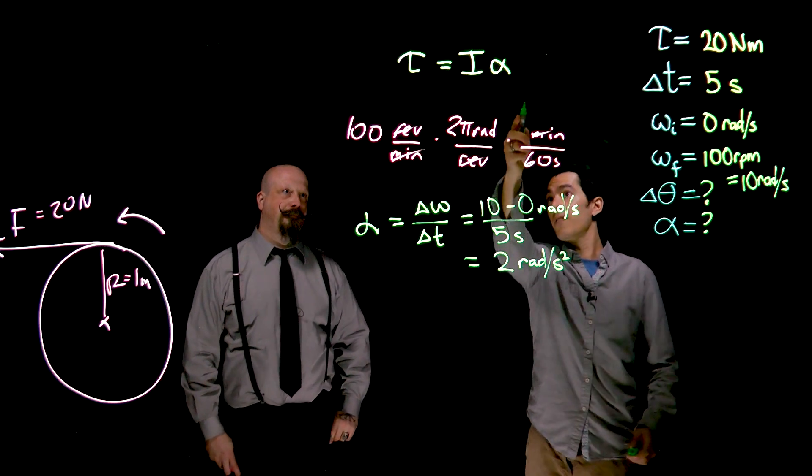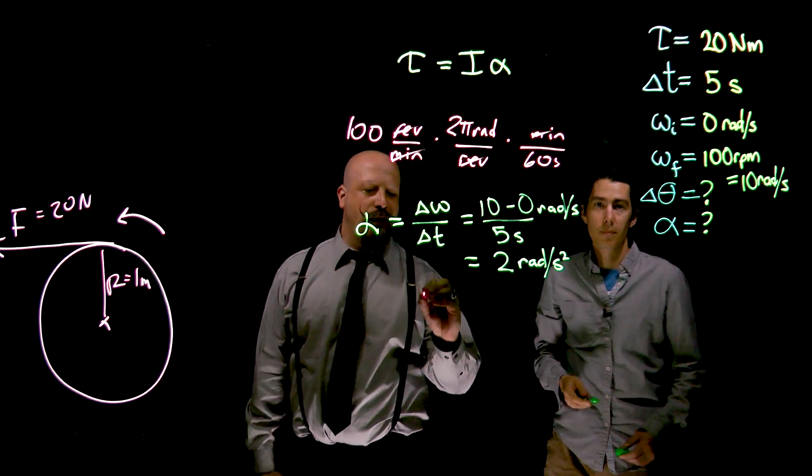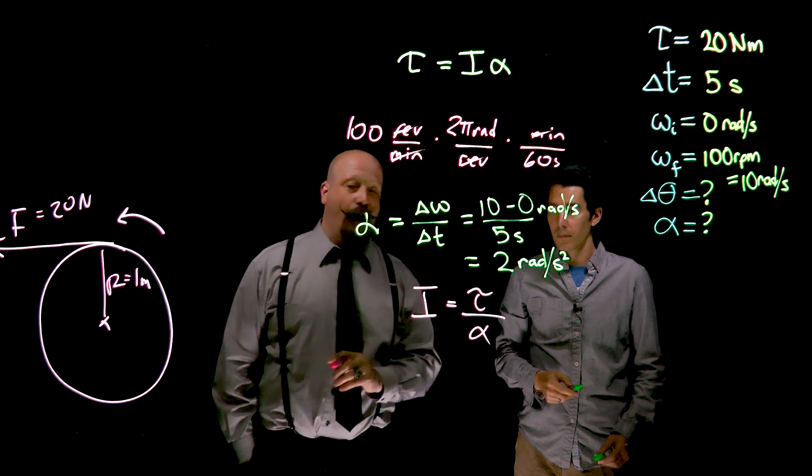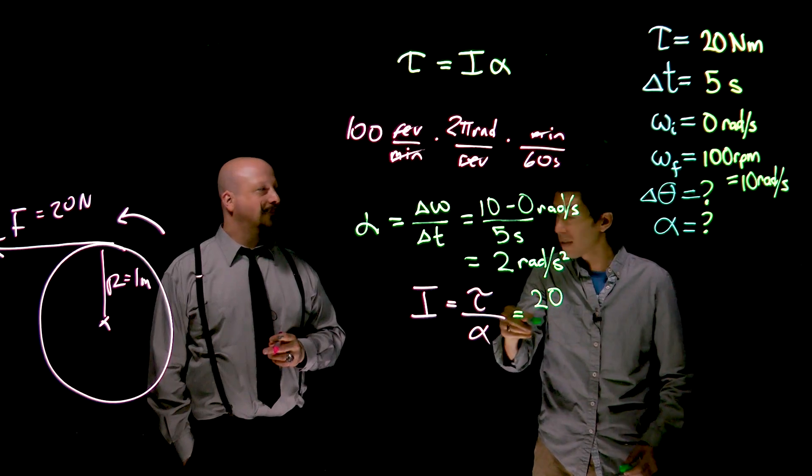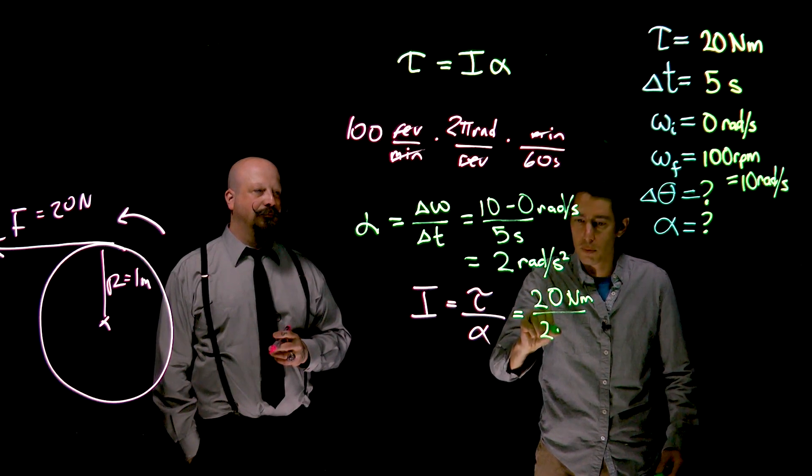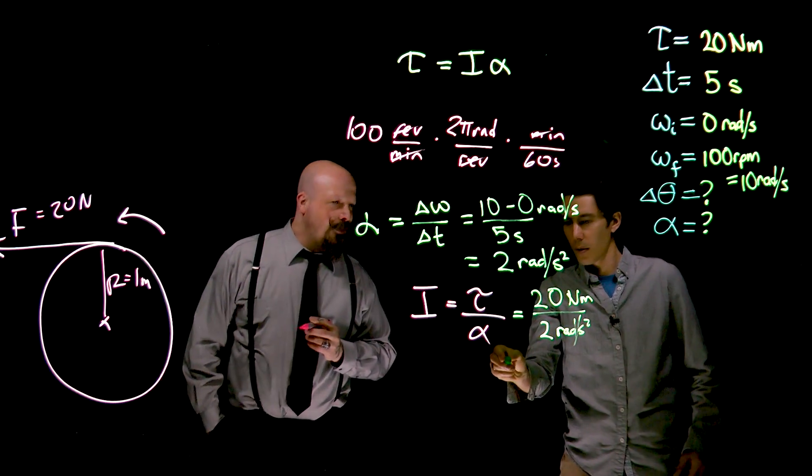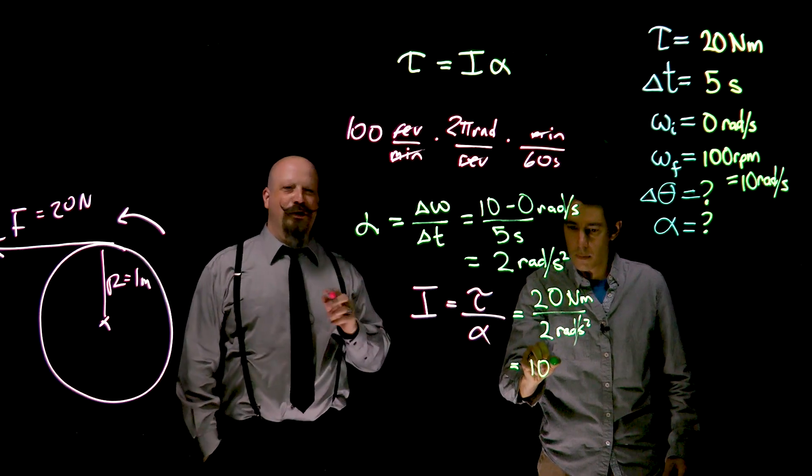So, we have alpha, we have the torque now. We can get I. We want to solve for that moment of inertia. That moment of inertia is equal to the torque divided by alpha. And that's 20, I'm putting the equal sign, 20 Newton meters divided by 2 radians per second squared. And it gives us a moment of inertia of 10 Newton meters second squared per radians.